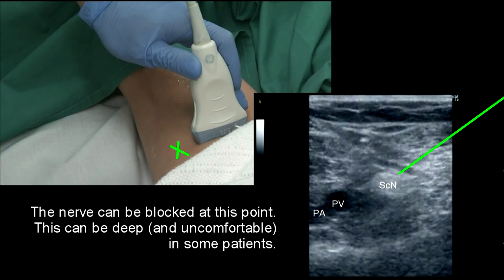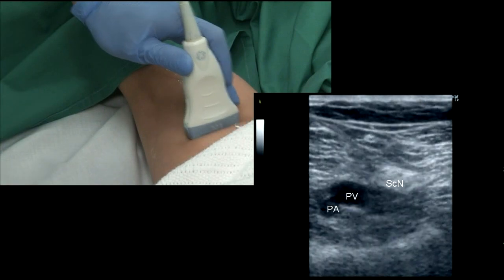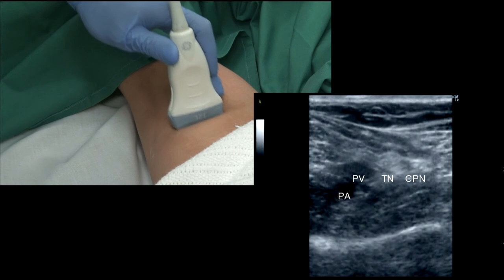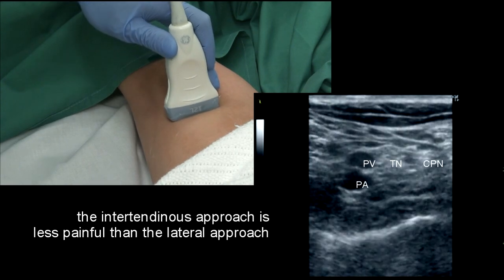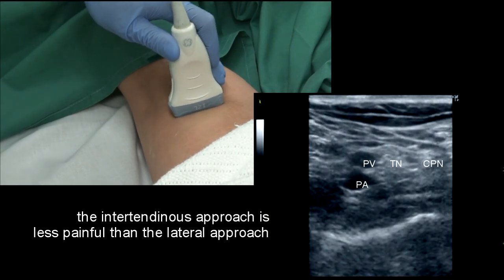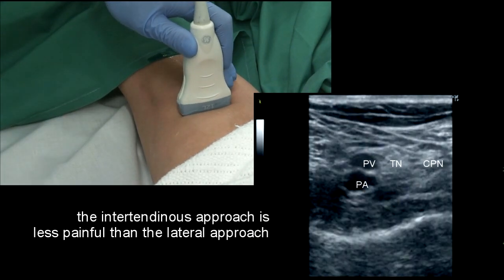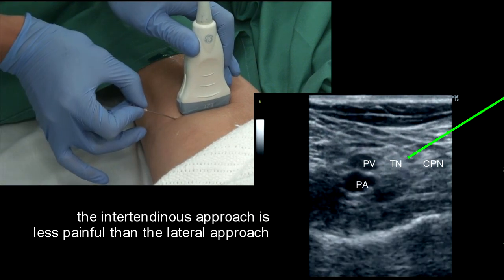The mid-sciatic approach can be uncomfortable for the patient, but allows an effective, more proximal block. The intertendinous popliteal approach doesn't require injection through the lower part of biceps femoris.